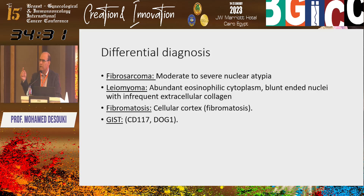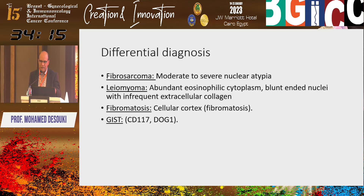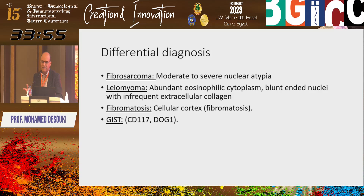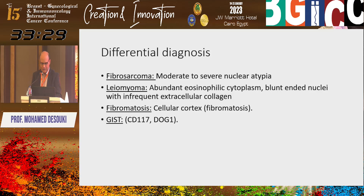Fibroma differential diagnosis: fibrosarcoma — you need atypia, severe or at least moderate atypia with different sizes and shapes. Leiomyoma is very very rare in the ovary; I do smooth muscle markers which come back negative, so everything is fibroma until proven otherwise. Fibromatosis is diffuse expansion of the ovarian stroma, usually bilateral. GI stromal tumor — stains will help with this. Fibroma really has almost no differential; when you see it, just call it fibroma.